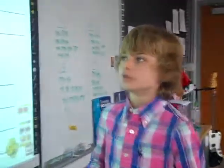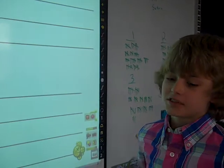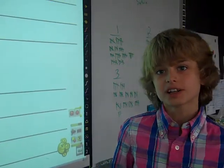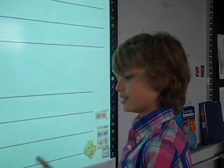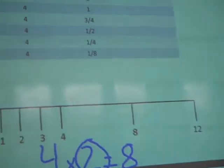Okay, so for example, four times one-eighth. Since fractions are like division problems and division gets smaller, it makes sense that if you multiply a whole number by a fraction, it would get smaller because a fraction is division.